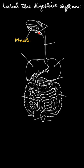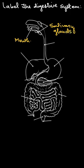These two things are the glands which are known as the salivary glands. These glands secrete saliva into the mouth. Then from here we have a long tube-like structure which connects the mouth to the stomach, which is called the esophagus. So here we have the esophagus.